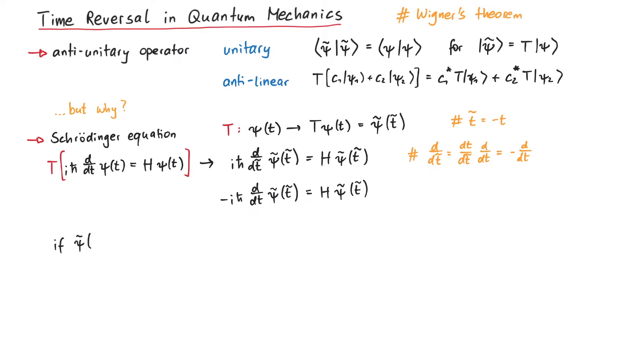And indeed, if we claim that psi tilde of t tilde is exactly the same as the complex conjugate of the original function of psi of t, then we get back the initial Schrödinger equation, and have confirmed that time reversal is a valid symmetry of the Schrödinger equation. In accordance with our definition, the complex conjugation is both unitary and anti-linear, so it's a good representation of time reversal for this system.